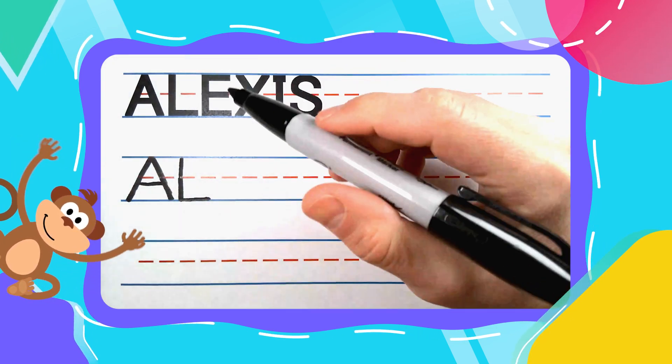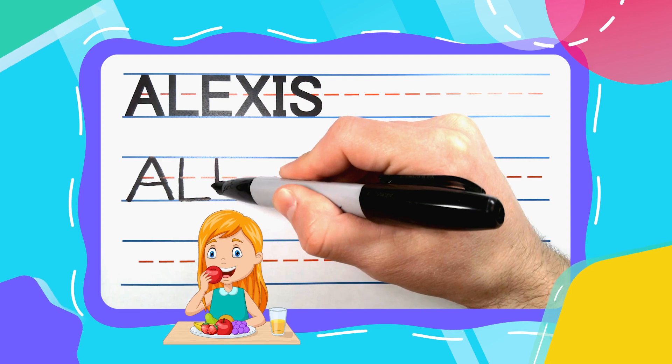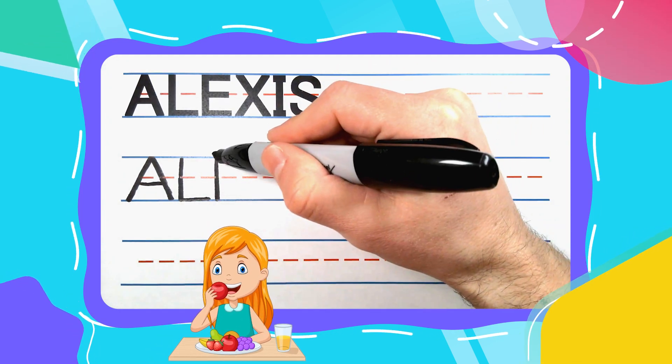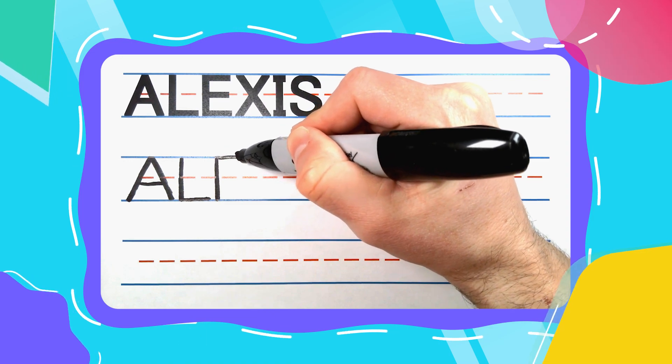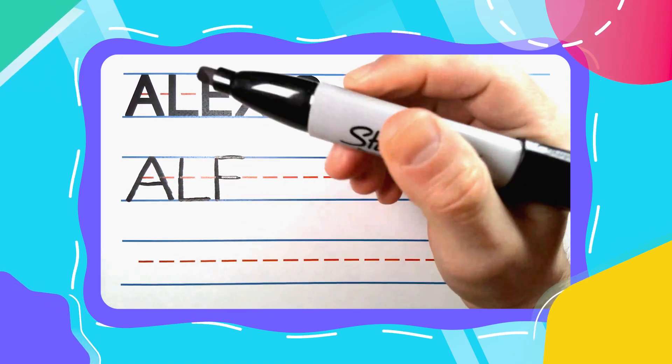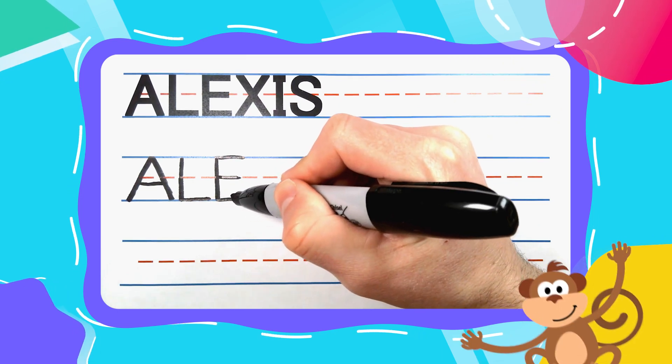The next letter in Alexis is an E, and every E likes to eat, especially this E. Straight up and down to start, then three left to right lines. A big one at the top, a smaller one in the middle, and another big one down at the bottom.